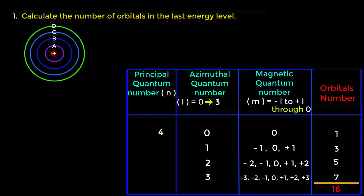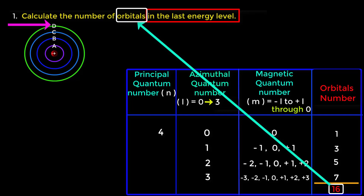Therefore we can say that in the last energy level N there are 16 orbitals.